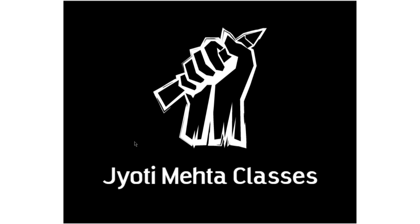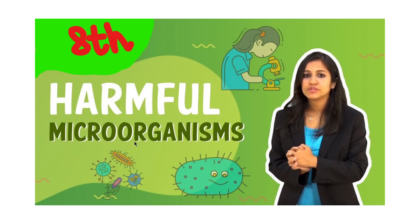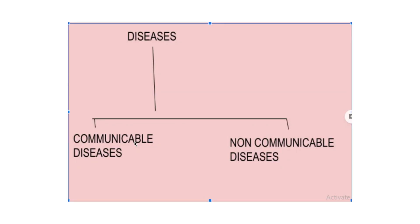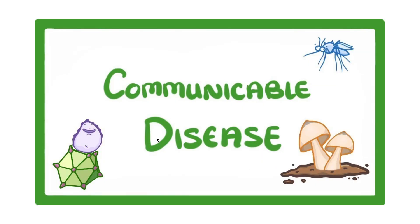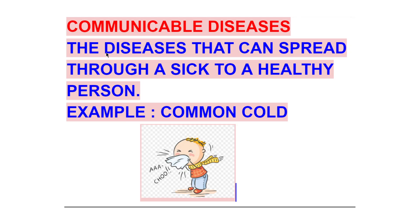Hello students, today we are going to study about harmful organisms. Diseases are of two types: one is communicable diseases and another one is non-communicable diseases. Non-communicable diseases are those which cannot pass from one person to another person, while communicable diseases we are going to study in detail.